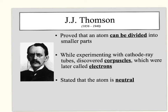You're going to notice that a lot of these theories build on top of a previous scientist's theory. J.J. Thompson lived from 1856 to 1940. He proposed that an atom can be divided into smaller parts, saying that Dalton and Democritus were wrong — they said it could not be divided, and J.J. Thompson proved that it could.